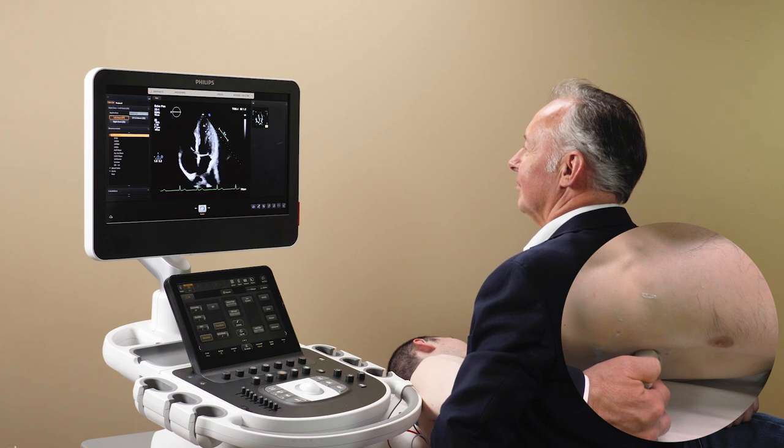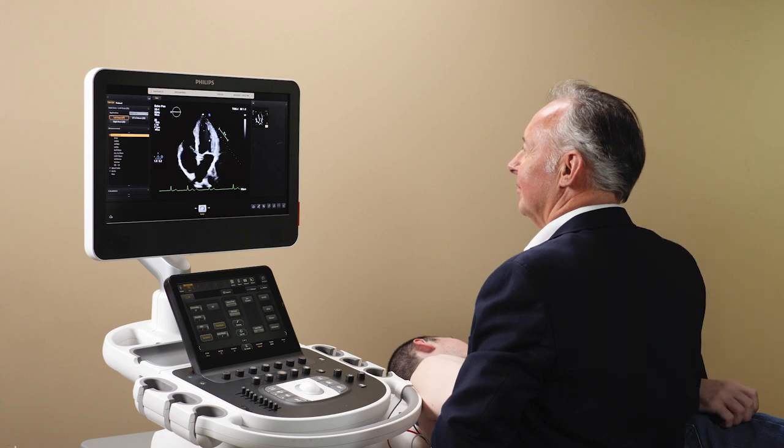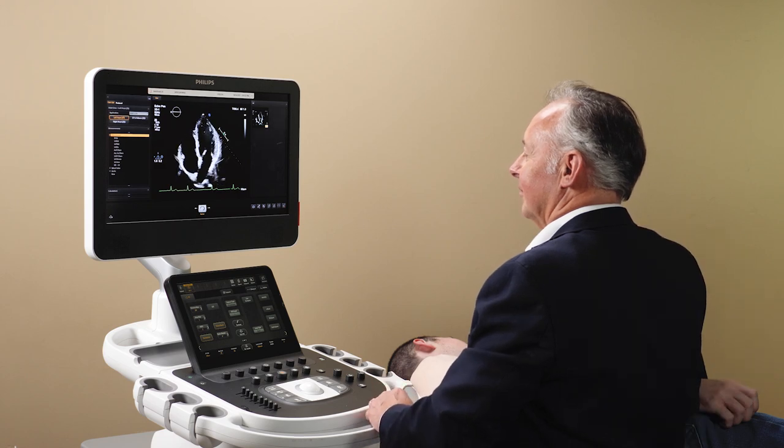Start from an apical 4 chamber view and rotate the probe slightly counter-clockwise until the base and the length of the left atrium is at its largest size. Press ACQUIRE.